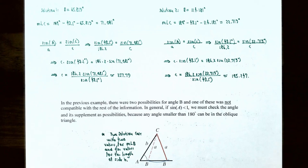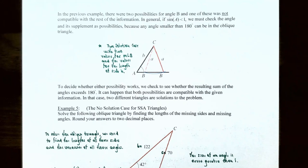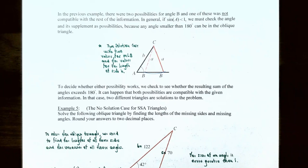There are two different solutions because sine of 0.912 can correspond to angles in both quadrant one and quadrant two. In general, if you have sin(angle) less than one, you need to check whether the angle and its supplement are both valid possibilities, since an angle less than 180° can be in an oblique triangle. To decide, check whether the resulting sum of angles exceeds 180°.